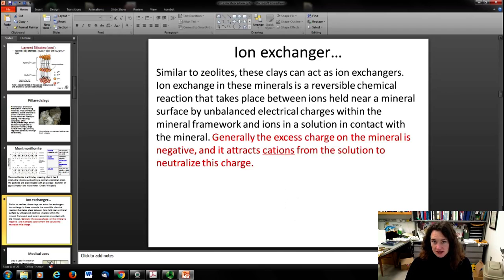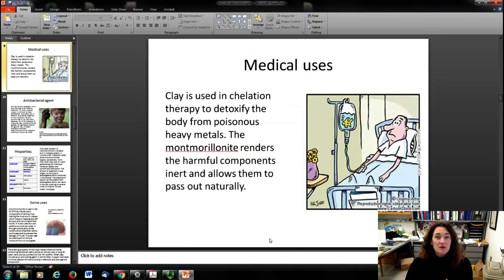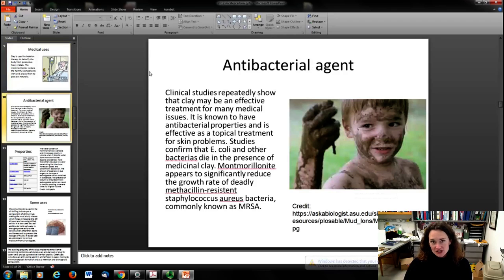For example, medical uses: some of these clays are used in chelation therapy. If you get heavy metal poisoning, they pull your blood out and pass it through, and the montmorillonite renders the harmful components inert, allowing them to pass out naturally. It filters out those nasty heavy metals present in your blood when you've been poisoned.